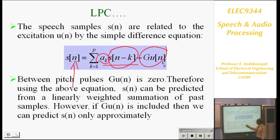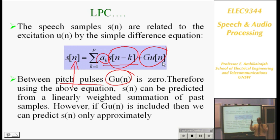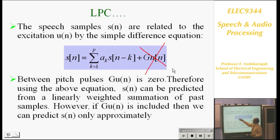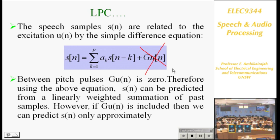We are saying between pitch pulses, the excitation U(n) is zero. This excitation is only present at the start of each pitch pulse; in between, it's zero. So can I say the current sample can be predicted as a linear combination of past samples? Yes — if the excitation is not there, you can say that. The current sample equals a linear combination of past samples.